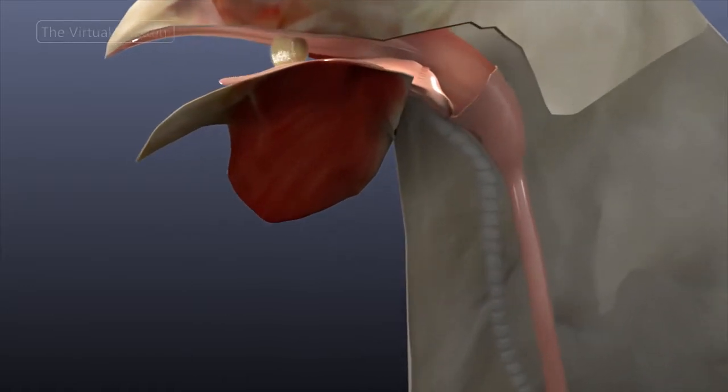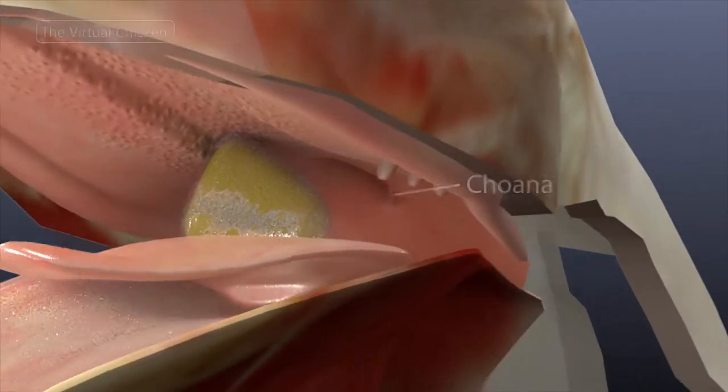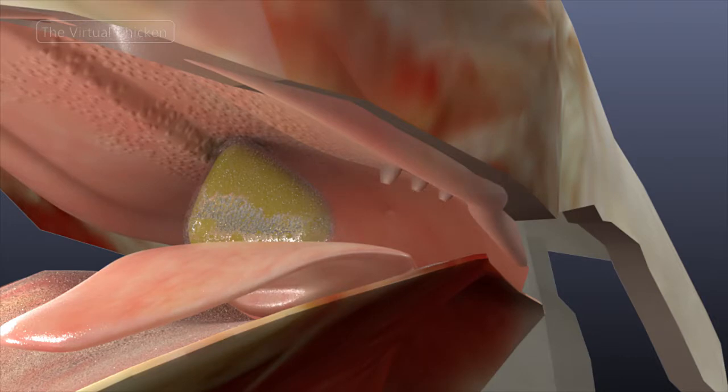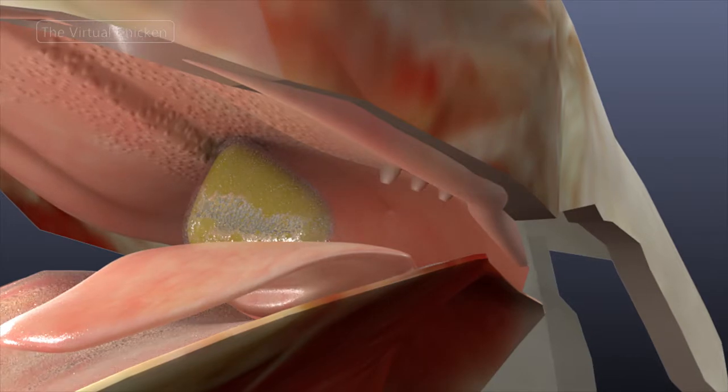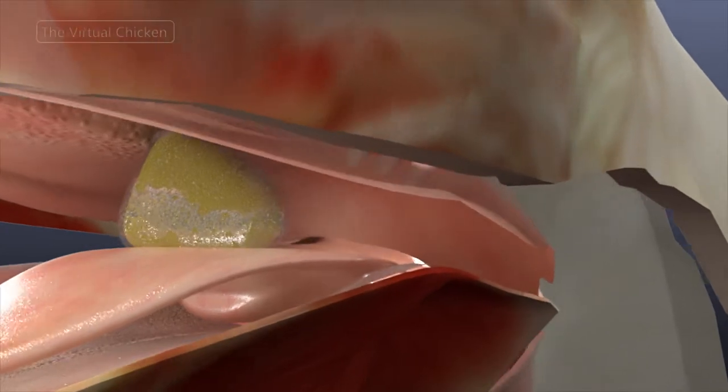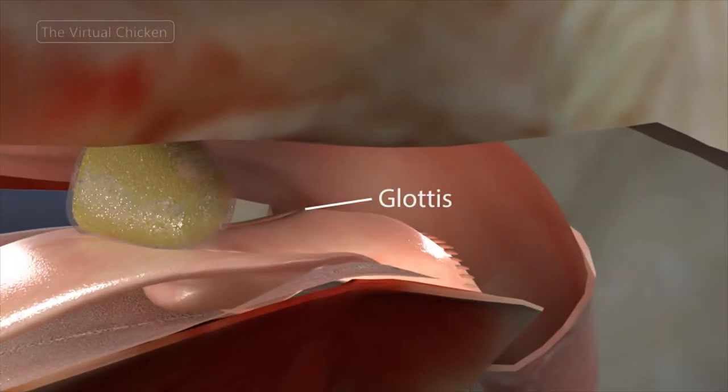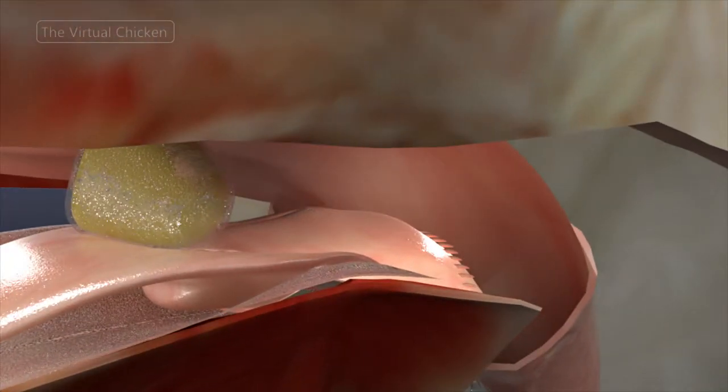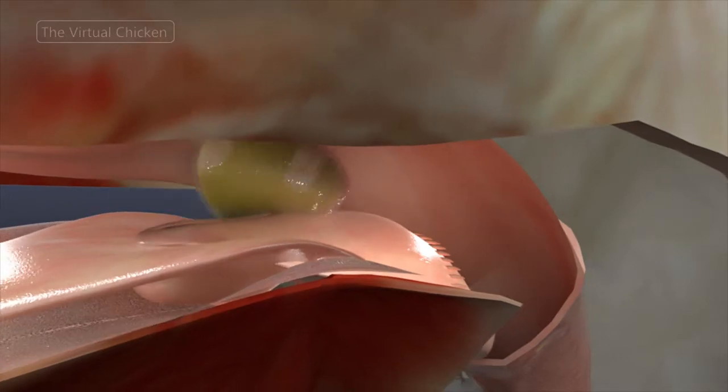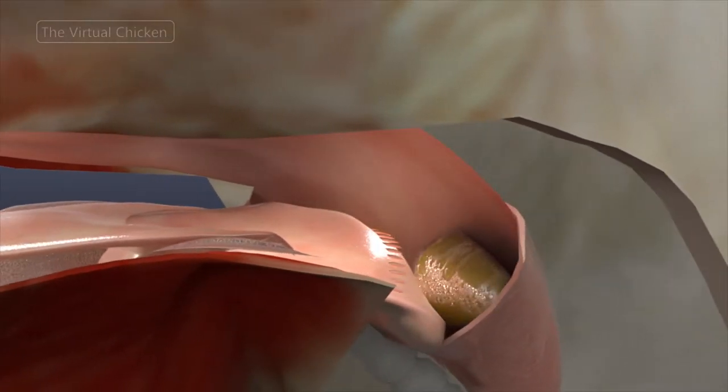As food is moved towards the back of the tongue, the coana reflexively closes. In the pharyngeal phase, the infundibular mound and glottis close. The tongue is moved backward and the esophagus is moved forward, decreasing the distance between the oral cavity and the esophagus.